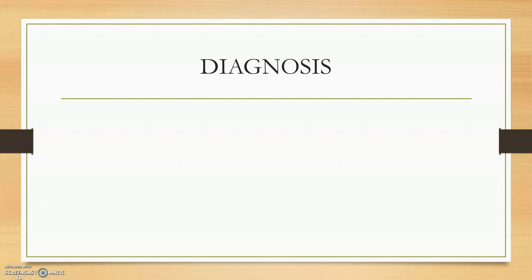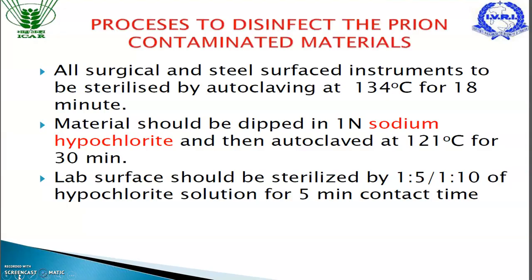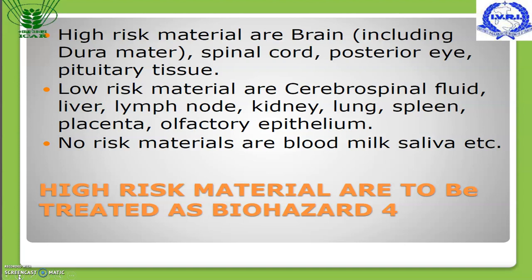Diagnosis of prion disease has no confirmed gold standard test. It relies on clinical symptoms, lesions, blood profile analysis, and brain tissue analysis. For decontamination of prion-contaminated materials, they should be dipped in 1 normal sodium hypochlorite. High-risk materials include brain, spinal cord, and posterior pituitary tissue. Blood is lower risk, but blood meal can still cause disease.